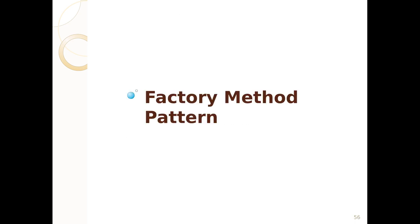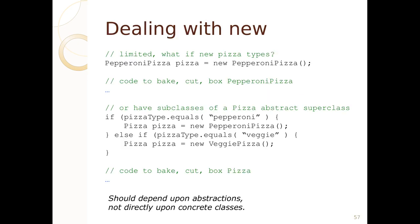The next pattern we're going to cover is the factory method pattern. Consider this — we want to make a new pepperoni pizza. So we've got an algorithm: we're going to make pepperoni pizza, then we're going to bake, cut, and box that pepperoni pizza.